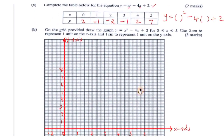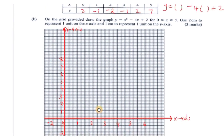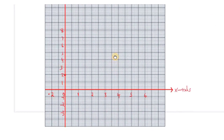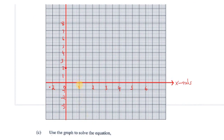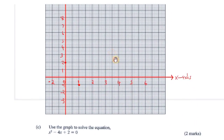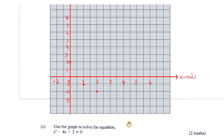The first point to plot is (0, 2): when x = 0, y = 2. Next is (1, -1), plotted at x = 1, y = -1. Then (2, -2), plotted at x = 2, y = -2. After that (3, -1), plotted at x = 3, y = -1.